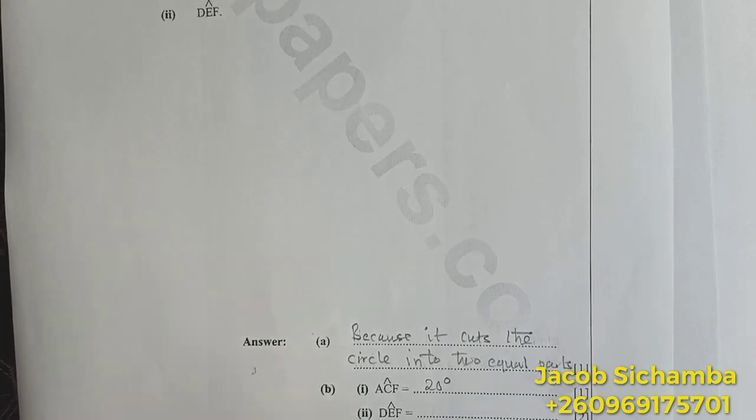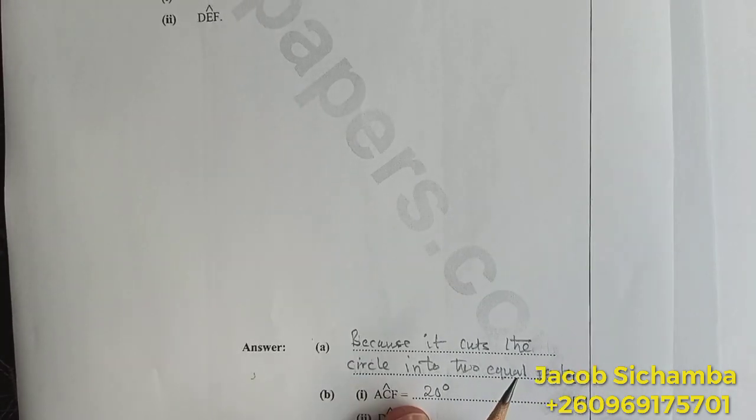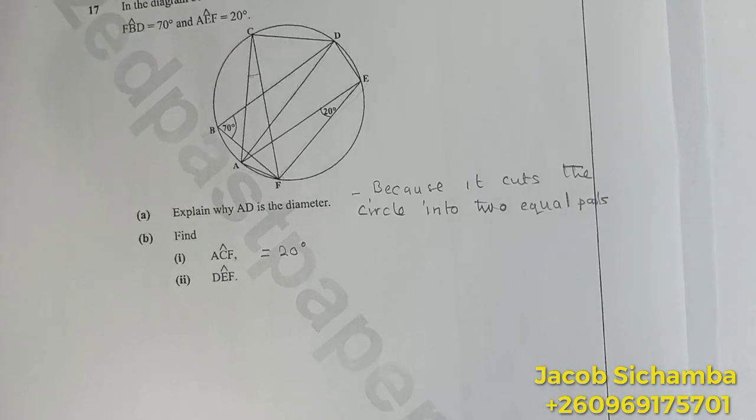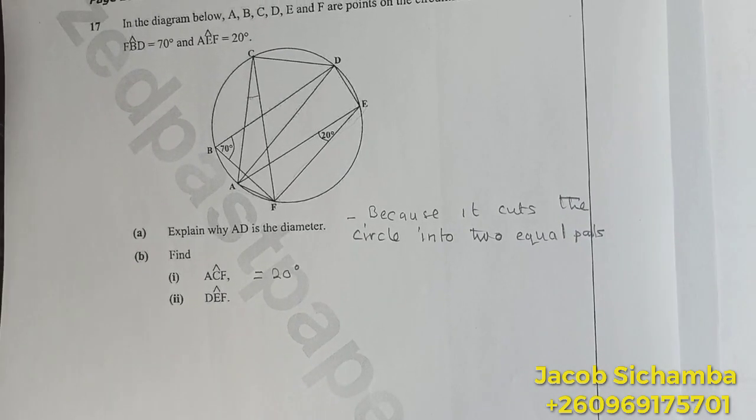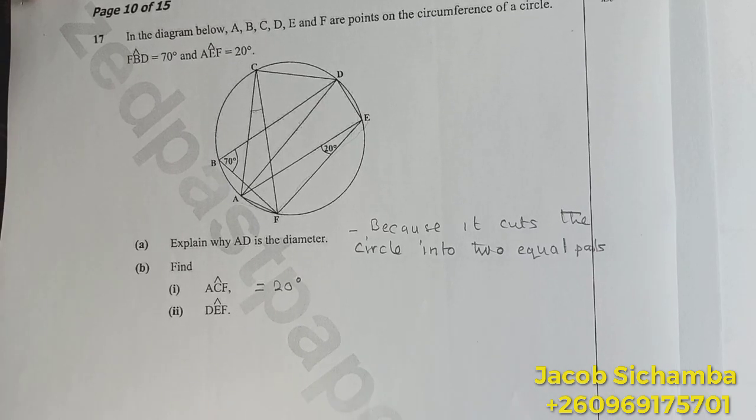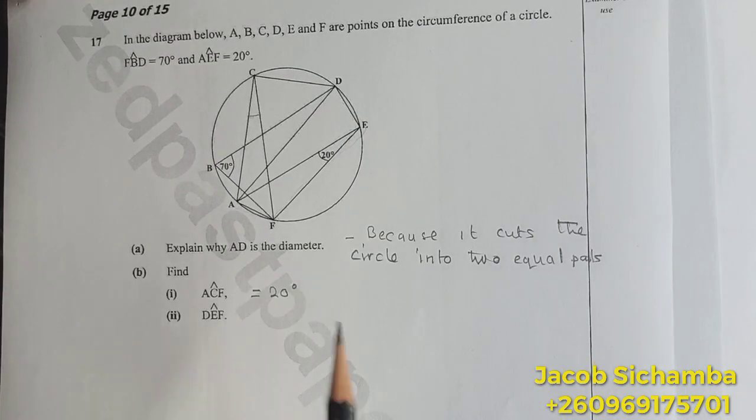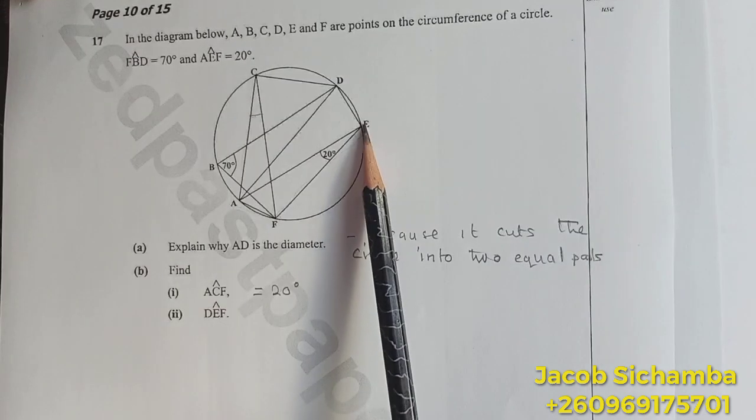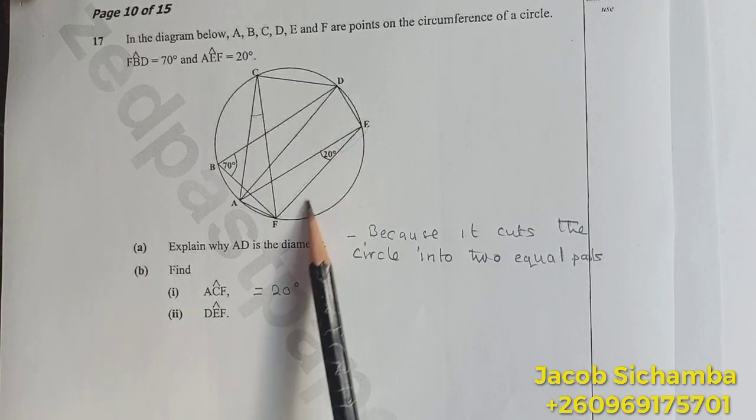That's two marks so far because we've got one and two. Lastly, we are asked to find the angle DEF. Where is D? Is right here, DEF.